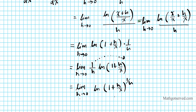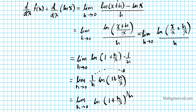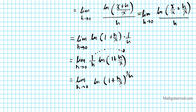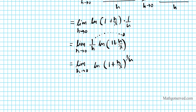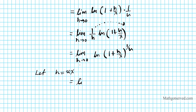Now I want to create an expression matching the definition of e, so I need to make a substitution. Let h equal u times x. Making that substitution, we get the limit as h approaches 0 of ln((1 + ux/x) raised to the 1 over ux).